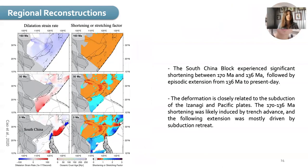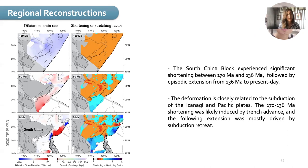The last update on regional reconstruction is what Gensti and Sabine have done. They propose a deforming plate tectonic model of the South China block since the Jurassic. Gensti and collaborators found that the South China block experienced significant shortening between 160 and 136 million years ago, followed by an episode of extension from 136 million years to the present. They also showed that the deformation is closely related to the subduction of the East Sanic and Pacific plates.